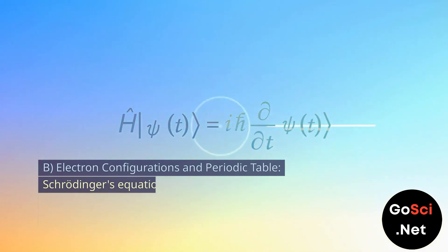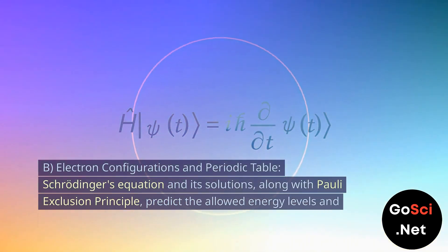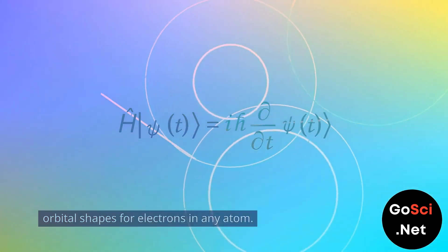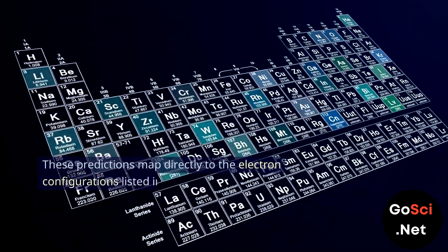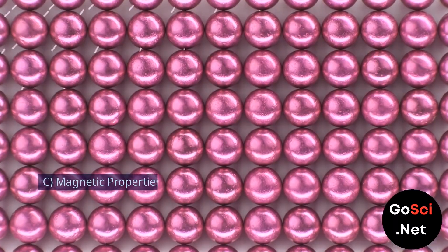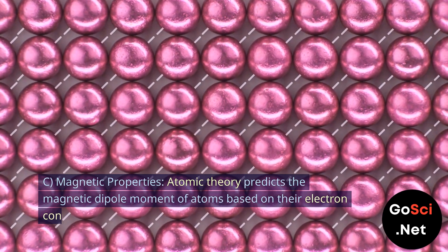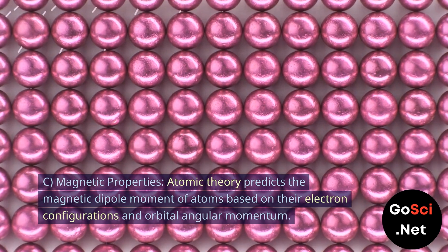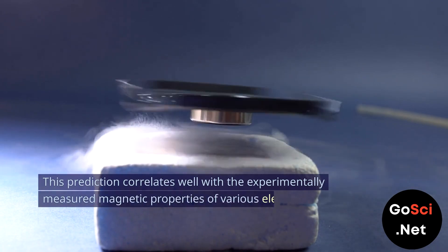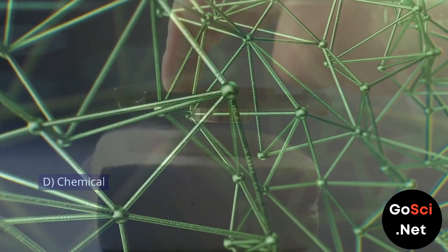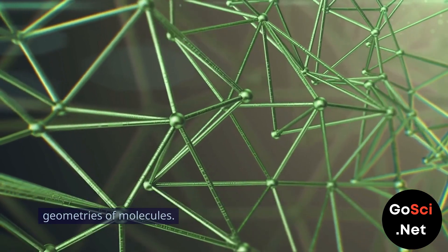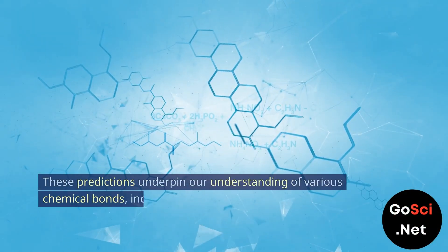B. Electron Configurations and Periodic Table: Schrödinger's equation and its solutions, along with the Pauli Exclusion Principle, predict the allowed energy levels and orbital shapes for electrons in any atom. These predictions map directly to the electron configurations listed in the periodic table and explain the periodic trends in chemical properties observed for different elements. C. Magnetic Properties: Atomic theory predicts the magnetic dipole moment of atoms based on their electron configurations and orbital angular momentum. This prediction correlates well with the experimentally measured magnetic properties of various elements and their compounds.